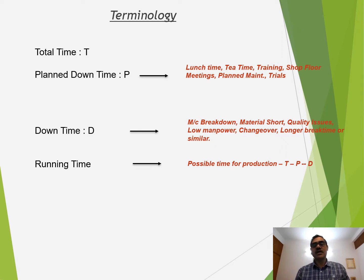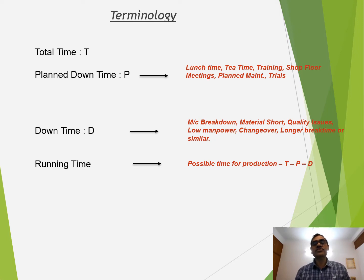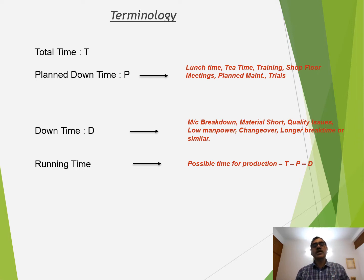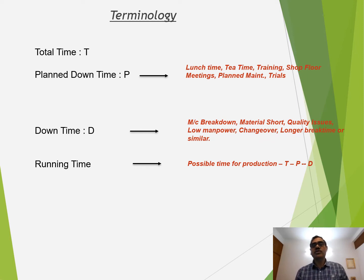Then there are unplanned downtimes like machine breakdown, the line stopping due to shortage of material or quality issues, low manpower causing the line to run slow, and changeover loss. All these unplanned downtimes come in this bracket. So the time available to us to do production will be total time minus the planned downtime minus the unplanned downtime.